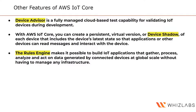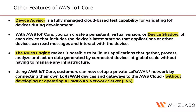AWS IoT Core also provides a Rules Engine that makes it possible to build applications that gather huge amounts of data, process, analyze, and act on it without managing infrastructure. For example, data can be routed to an S3 bucket, or a Lambda function can be triggered when a threshold is reached. Customers can also set up their own private LoRaWAN networks — a low-power wide-area networking protocol enabling wireless connections between battery-operated devices — without needing to manage their own LoRaWAN network server.